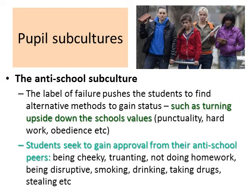Students seek to gain approval from their anti-school peers. Whereas in a pro-school subculture students want approval from teachers as well as friends, in an anti-school subculture they seek approval from peers. They may do this by being cheeky, by truanting, not doing homework, being disruptive, and perhaps even engaging in anti-social behaviour such as smoking, drinking, taking drugs, and stealing.